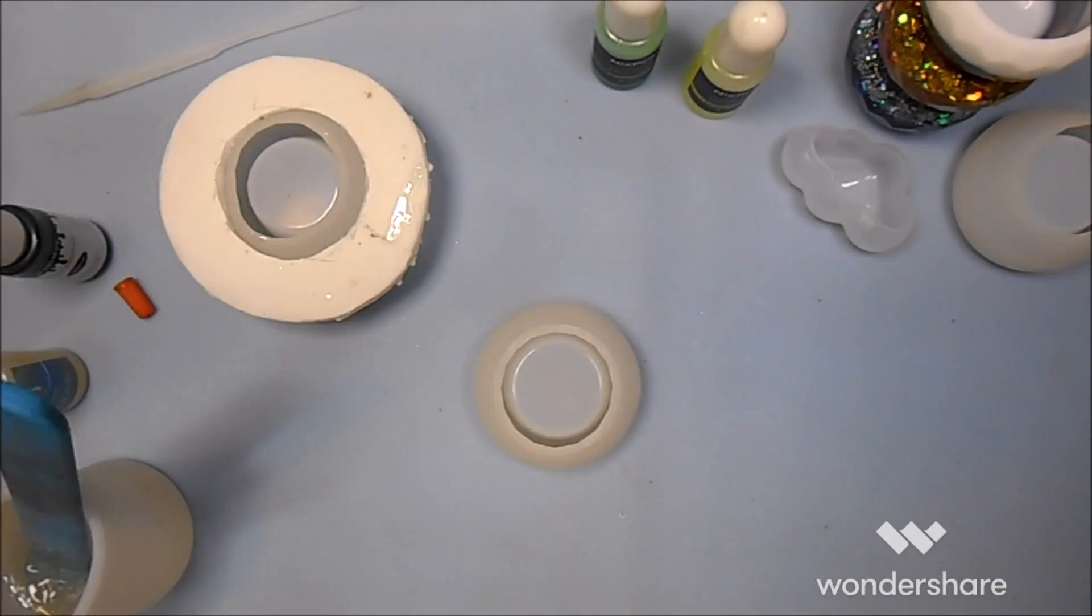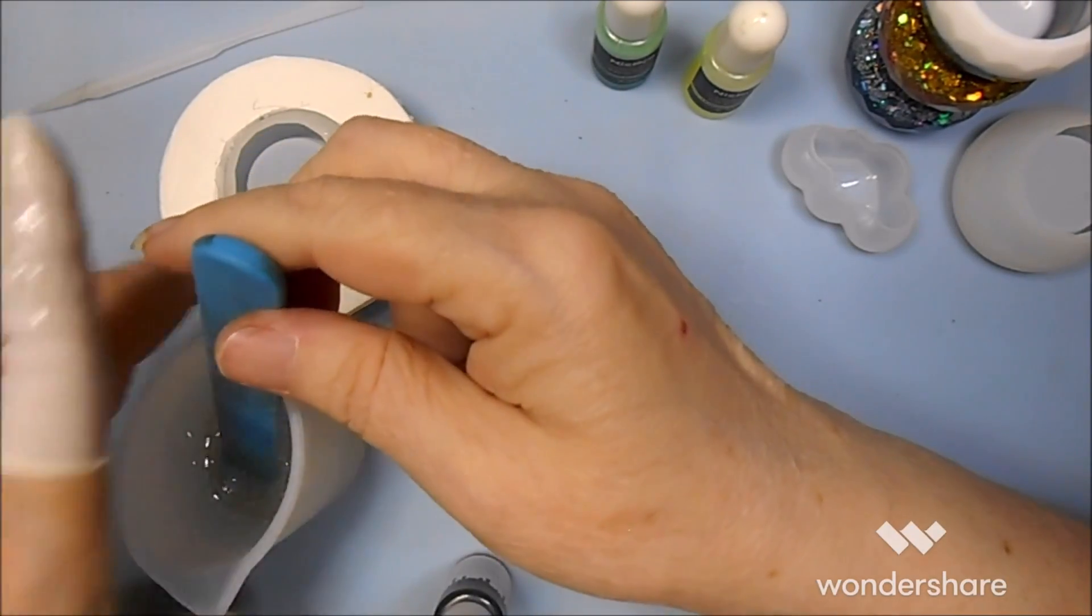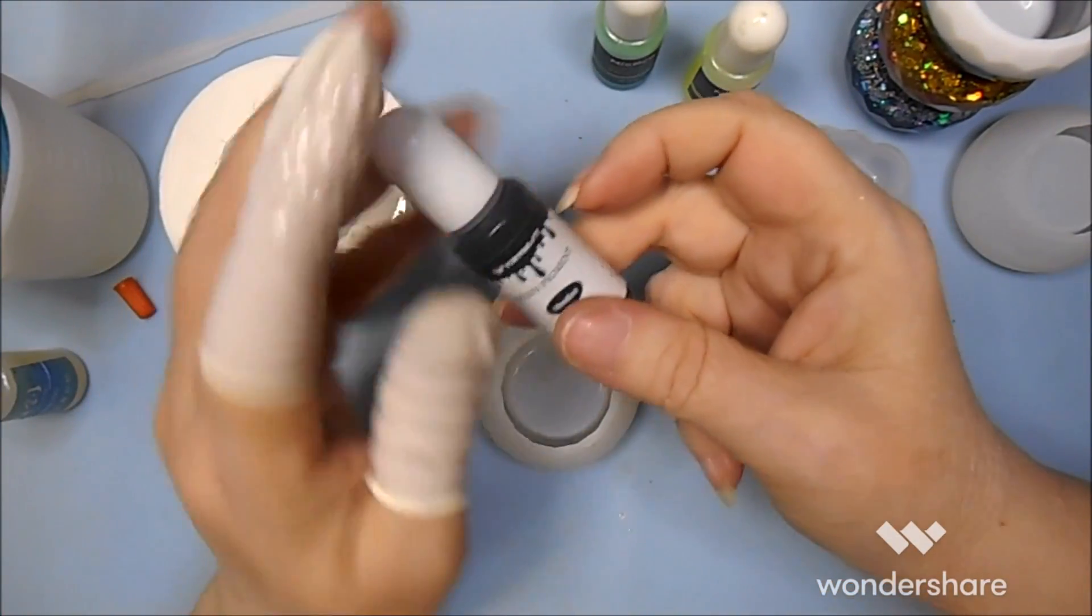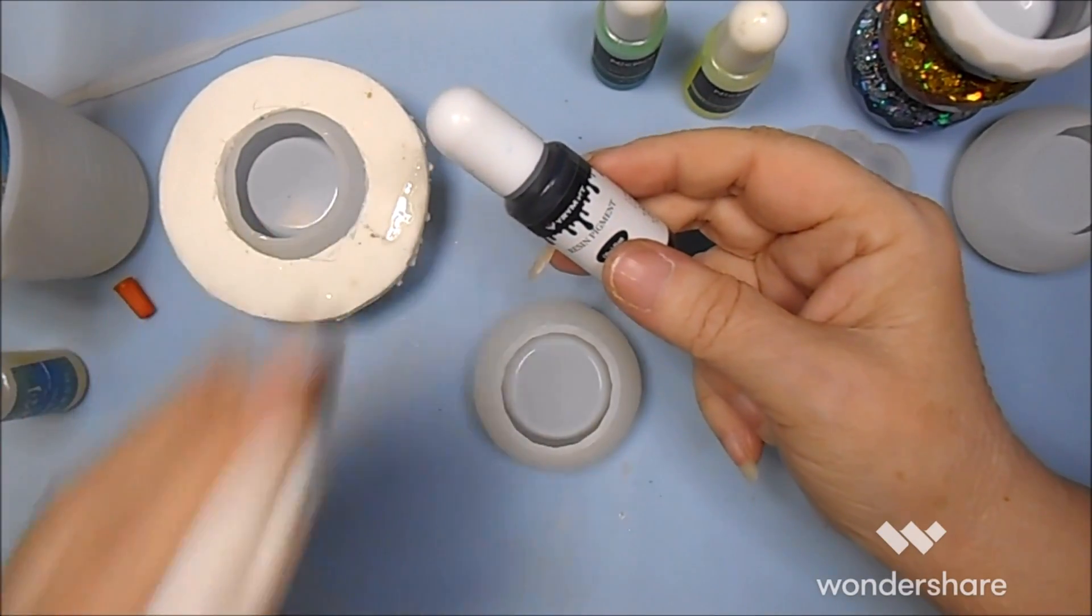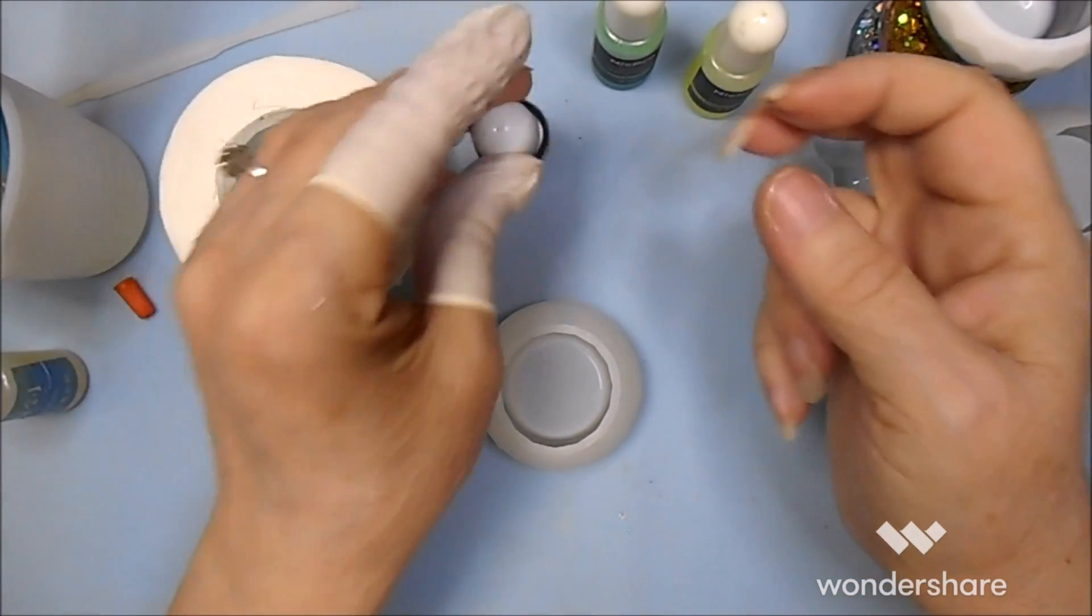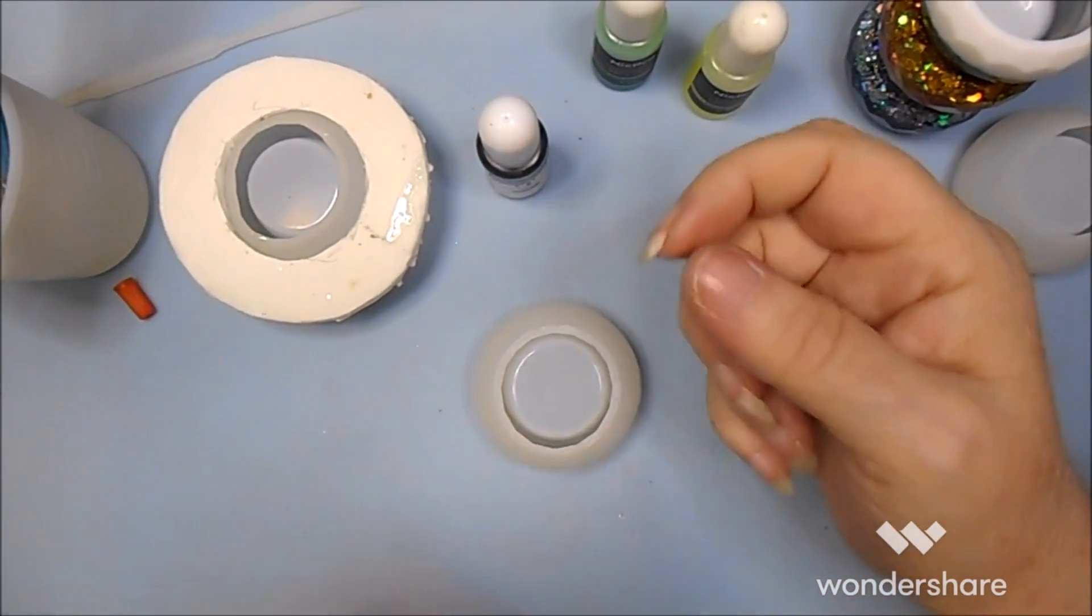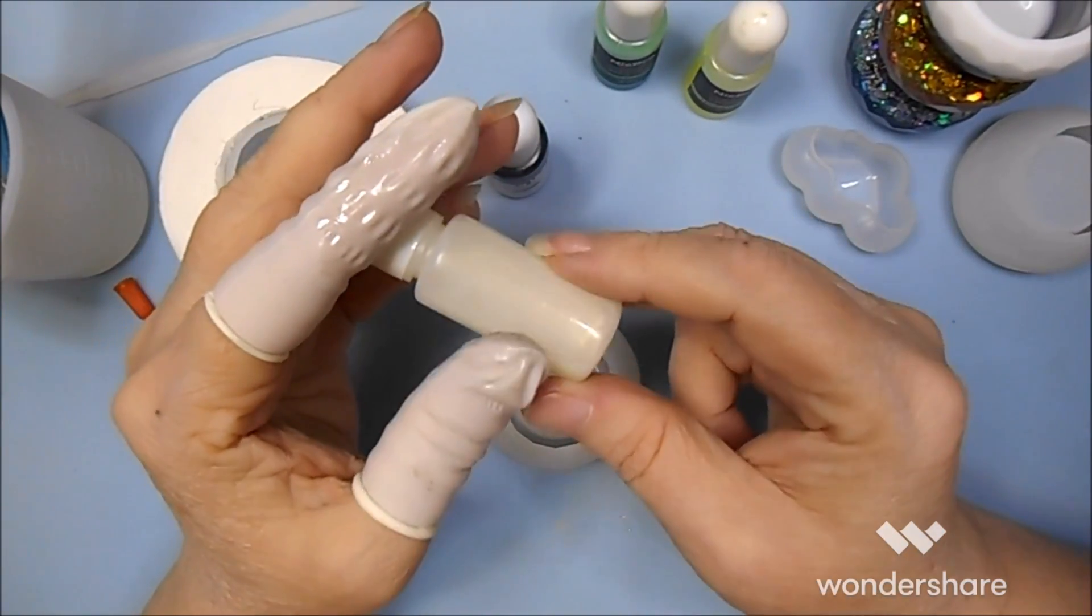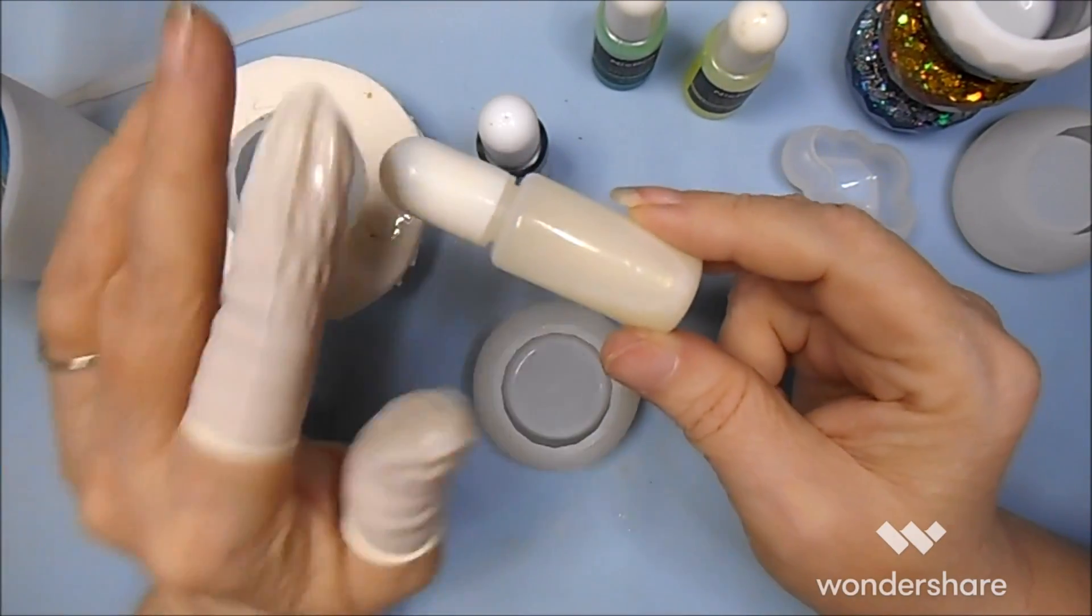Okay, now on this last one I'm doing a two-part resin because I want to do black. And if you do black, the light won't penetrate through the UV resin. And I want to try, I bought these probably a year ago.